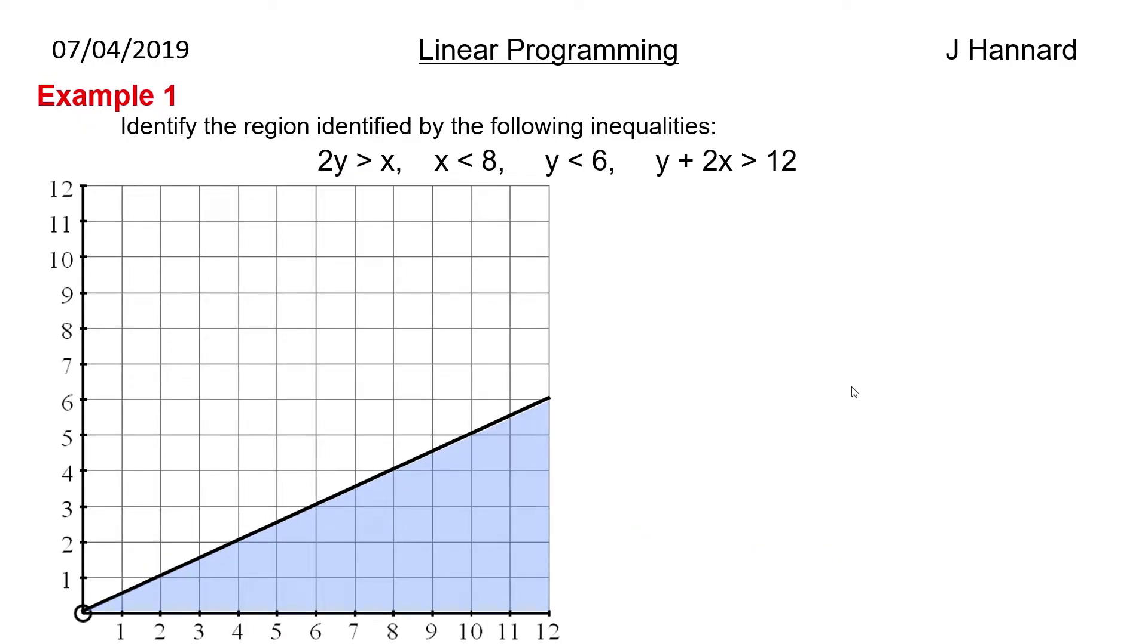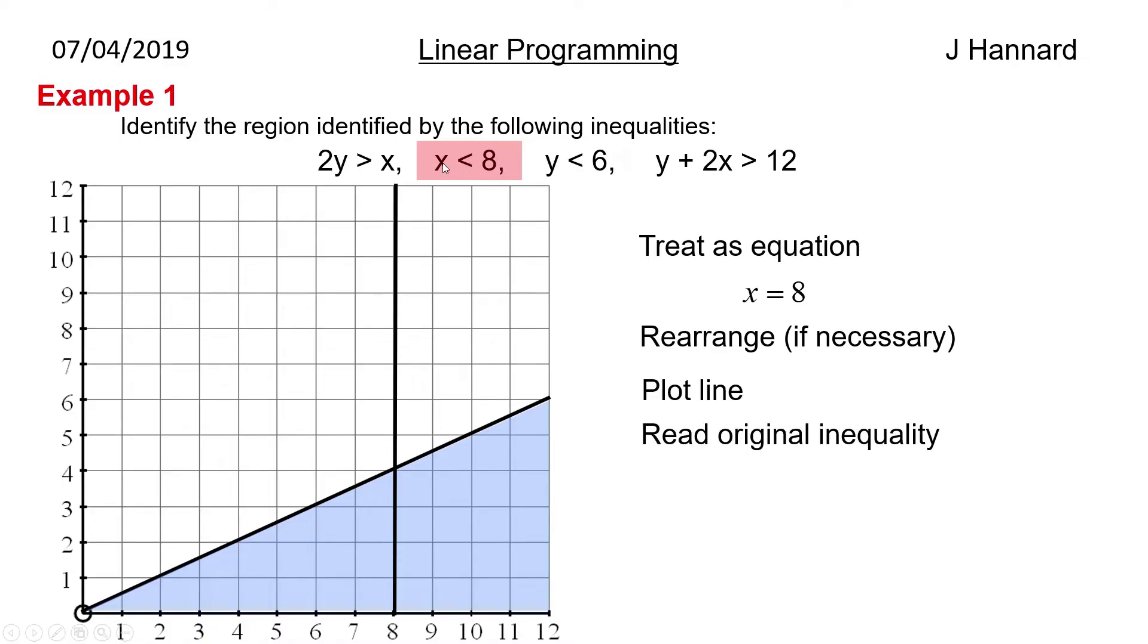So next we look at the line x is less than 8 or the inequality x is less than 8. But as before we treat it as an equation. x equals 8. We then draw that in. So basically x equals 8. So that's a vertical line through 8 on the x axis. And then we go back to our original inequality and we wanted x is less than 8. We want less than 8. So we shade the opposite. So we shade everything that's greater than 8. And that's all you're doing here. You're shading the bits that you don't want. Eventually you'll end up with a bit of white stuff that you do want. And that's the bit we're interested in.